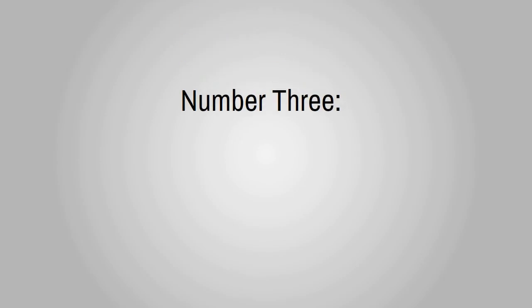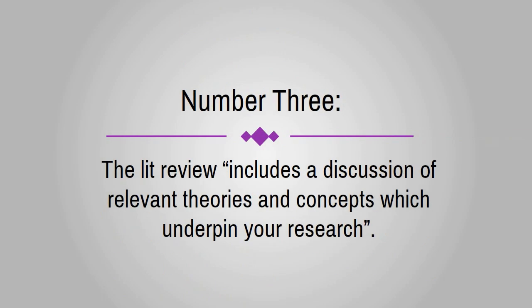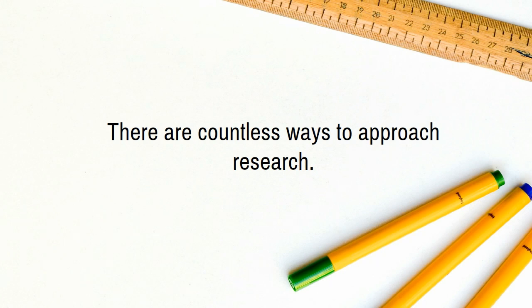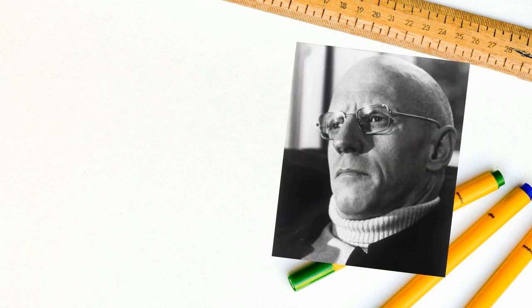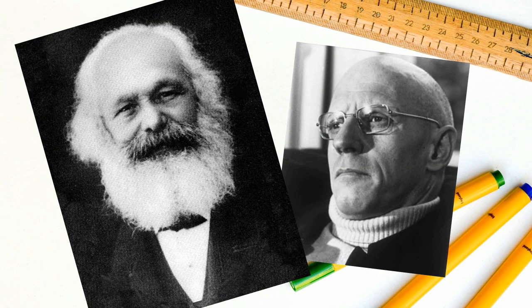Number 3. The lit review includes a discussion of relevant theories and concepts which underpin your research. There are countless ways to approach research. For example, if you are researching the relationship between the subject and the state, you need to explain how different theorists have approached this research and where your approach fits in. Are you following a Foucauldian approach? Or perhaps you're following a Marxian approach? Or a mix between the two?